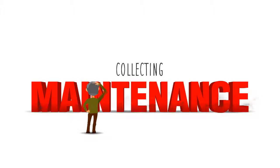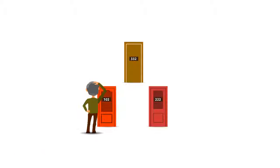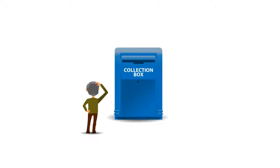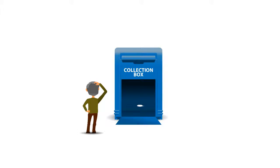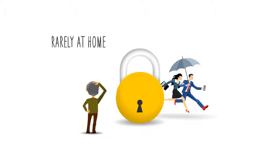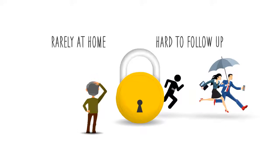Collecting maintenance is always difficult and more so in a large society. Many people often forget to drop their monthly maintenance check by the due date. Working couples are rarely at home, making it tough for society staff to follow up.